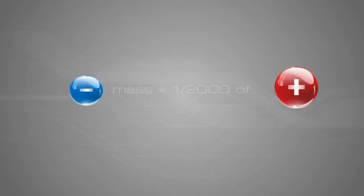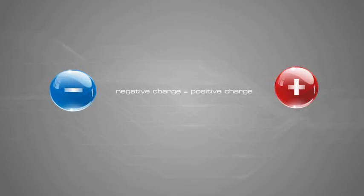Electrons have a mass of only one two-thousandth of that of a proton or neutron. However, the size of the negative charge carried by an electron is equal to the positive charge carried by the proton.